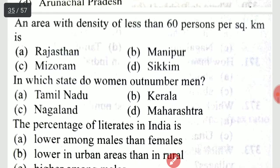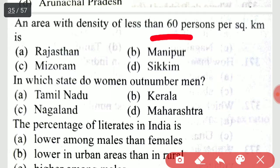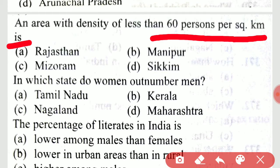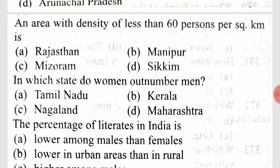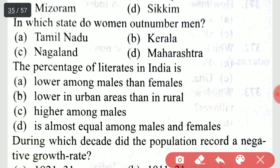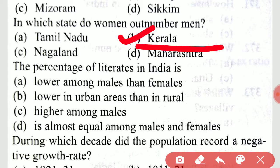An area with density of less than 60 persons per square kilometer is option C, Mizoram. In which state do women outnumber men? It is Kerala.